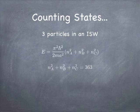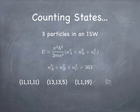Let's take a specific number — it's not completely random. It turns out if the sum of the squares of the states is 363, there are several different ways to achieve that. You can have N_A, N_B, and N_C all equal to 11. You could have two of them equal to 13 and one equal to 5, or two equal to 1 and one equal to 19. Or you could have one 5, one 7, and one 17.